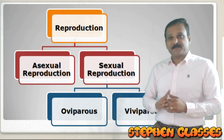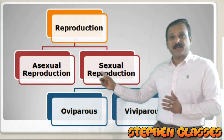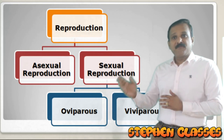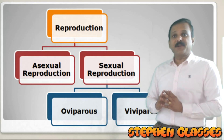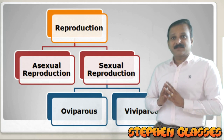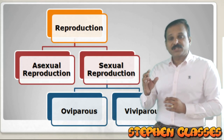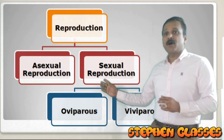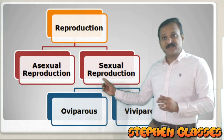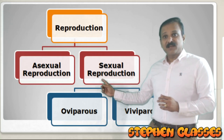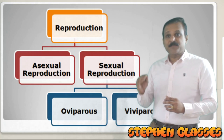In the case of sexual reproduction, two individuals are involved — it is bi-parental. One is the male individual and the other is the female individual. The male individual will produce the male gamete and the female individual will produce the female gamete. Through fusion of the gametes, a zygote is formed and further development occurs. When gametes are produced and fuse, that is called sexual reproduction.